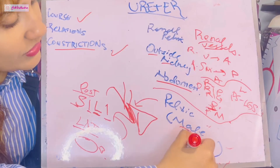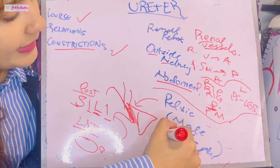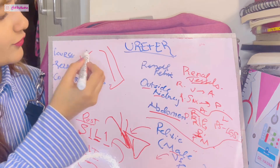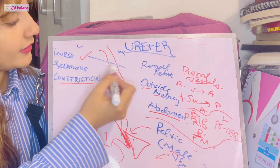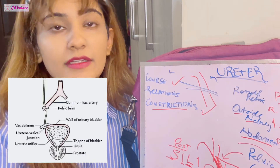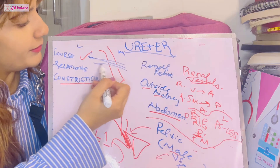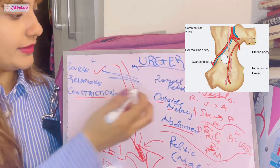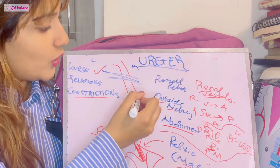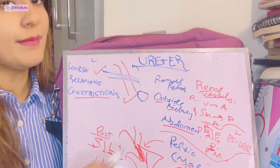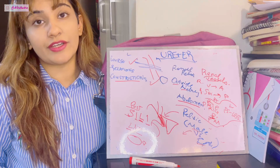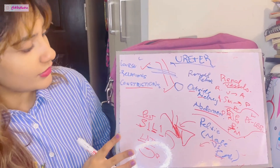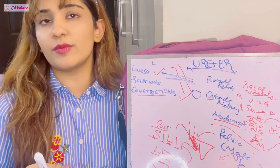For males versus females: in males, the ductus deferens crosses the ureter from its lateral to medial side. In females, the uterine artery crosses from the lateral to the medial side. Additionally, in males, below and behind the ureter lies the seminal vesicle — remember this as BB: below and behind. If you can remember all of these relations, you are good to go and will likely top your anatomy exam.